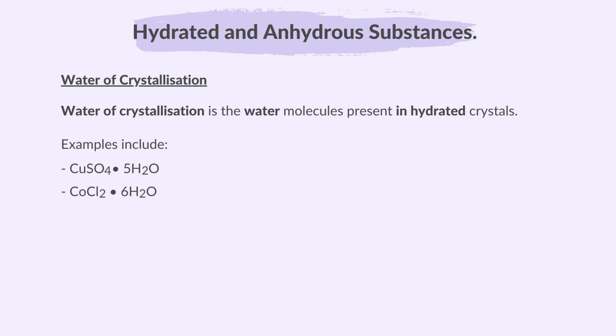When you heat a hydrated salt like hydrated copper(II) sulfate, it turns into the anhydrous salt — copper(II) sulfate — and releases water. This change can go back and forth, so it is a reversible reaction.